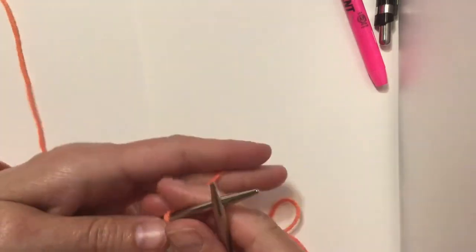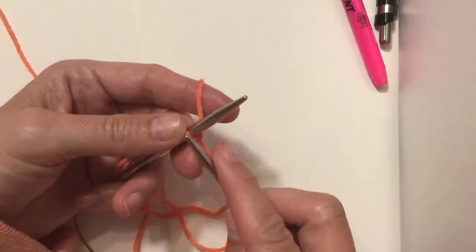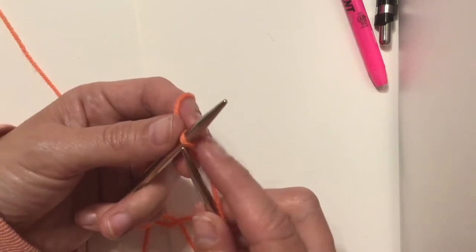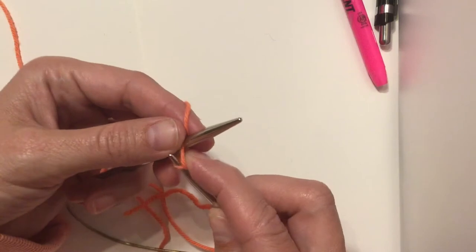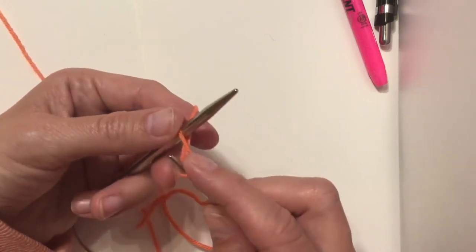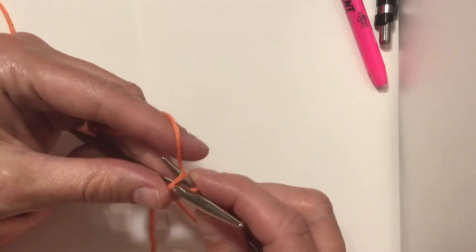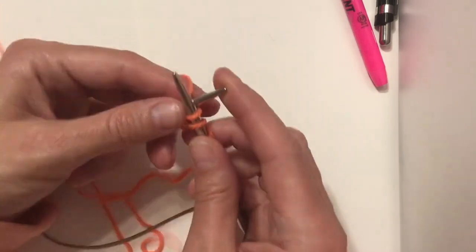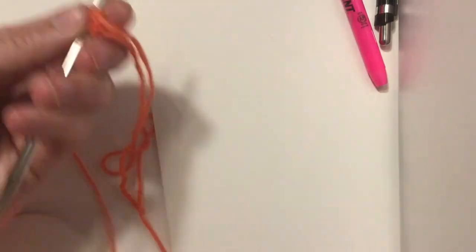So then you want to knit front and back. KFB is what the pattern says. So how you do that continental wise, and then I'll make another video of throwing. So you go into the front of the stitch like you normally would knit. You give it a little tug a little bit closer to you, and then you knit into the back of the stitch, and then you take these off of your left needle and complete the stitch. So now you have two stitches.